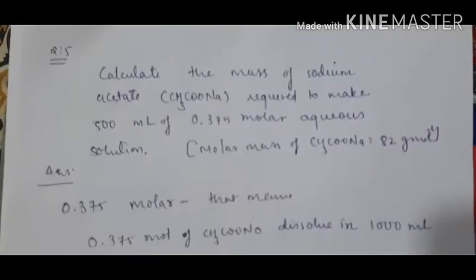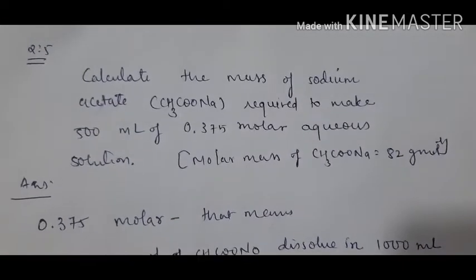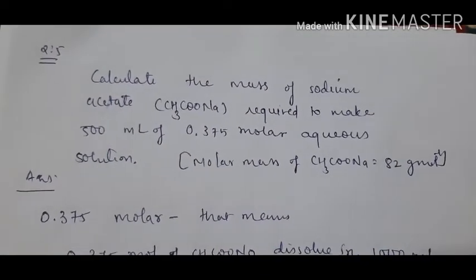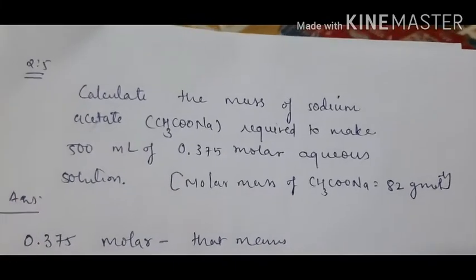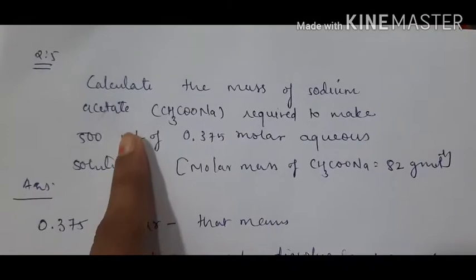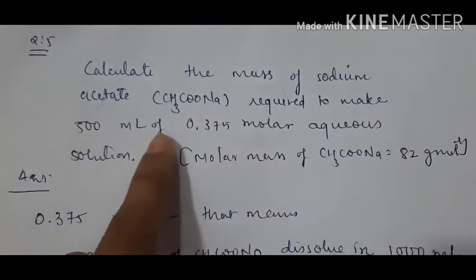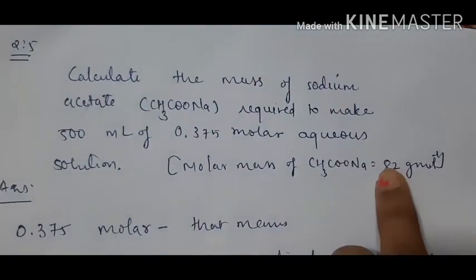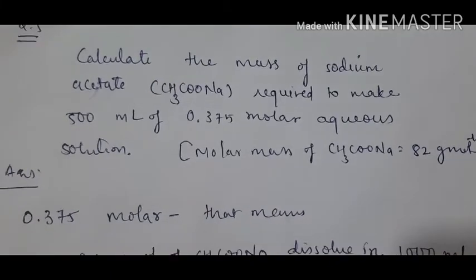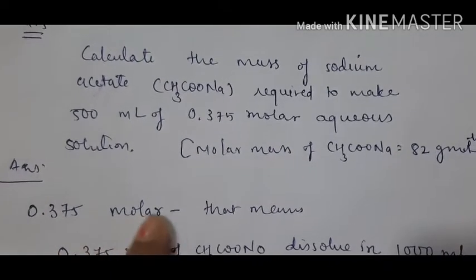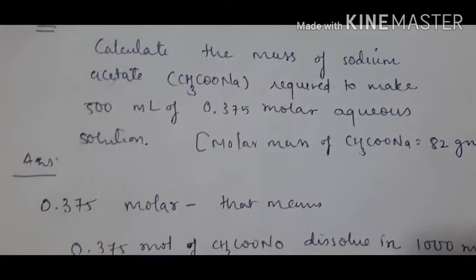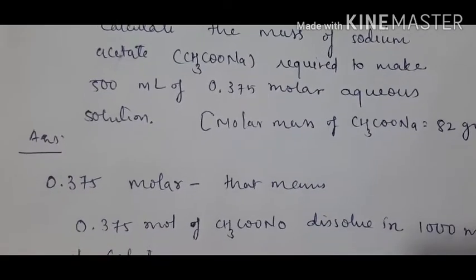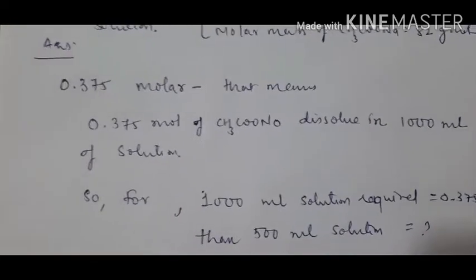Now for question number five, related to moles and molarity. Moles are found by: given mass divided by molar mass. The question asks: how much sodium acetate is required to make 500 mL of 0.375 molar aqueous solution? Molarity of 0.375 means 0.375 moles dissolved in 1000 mL (one liter) of solution.